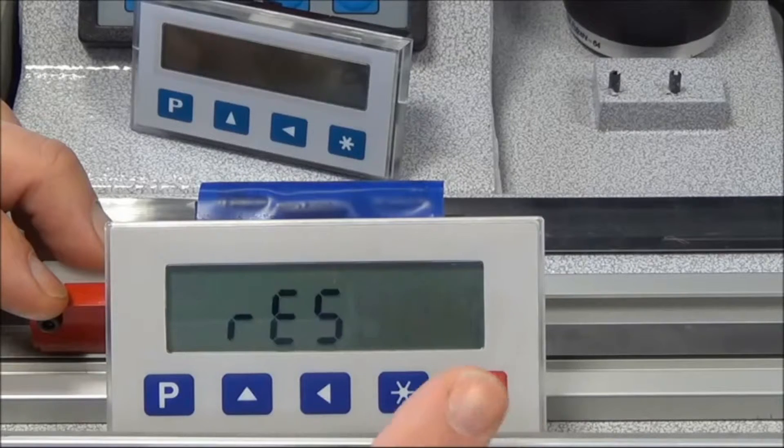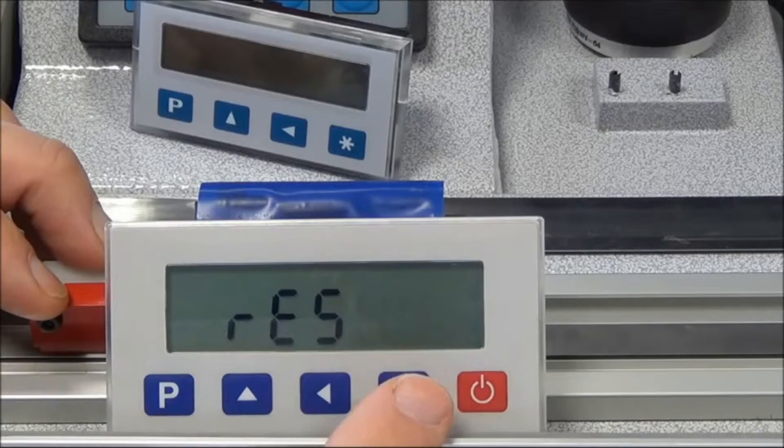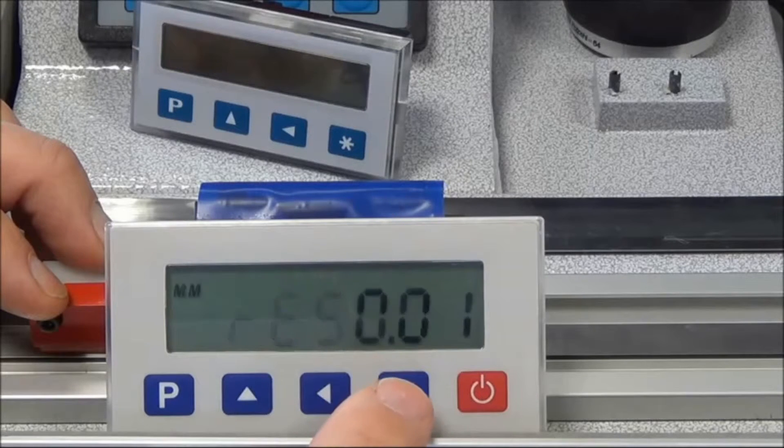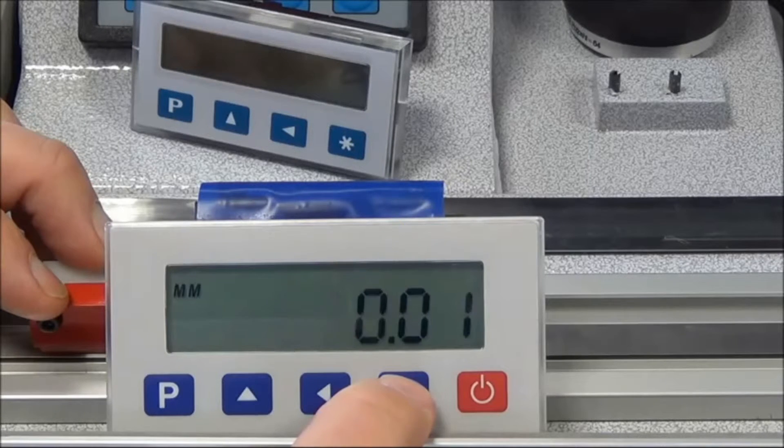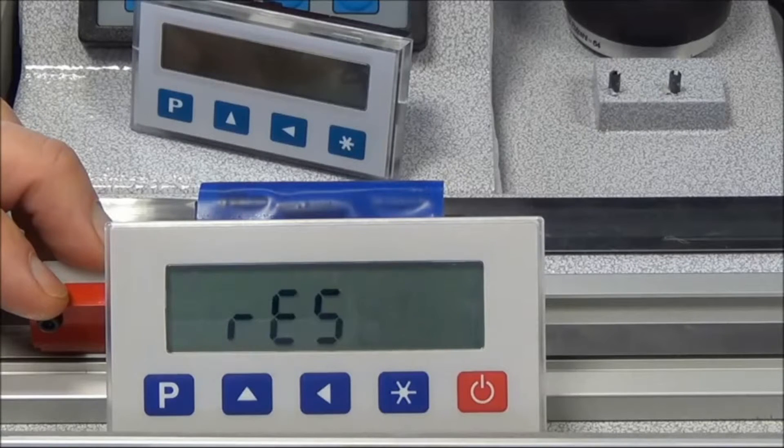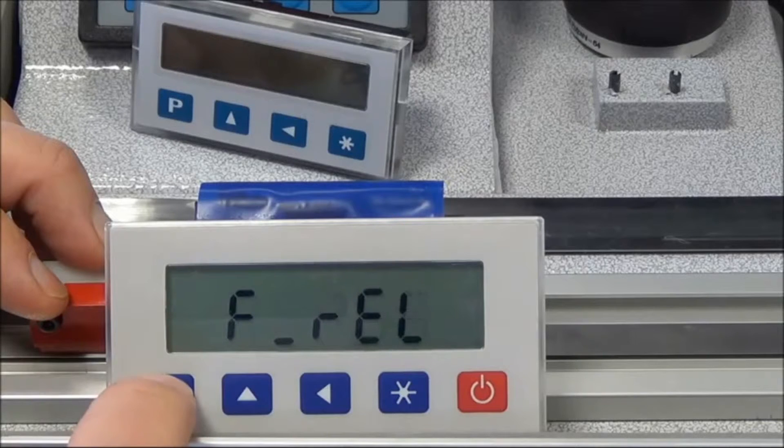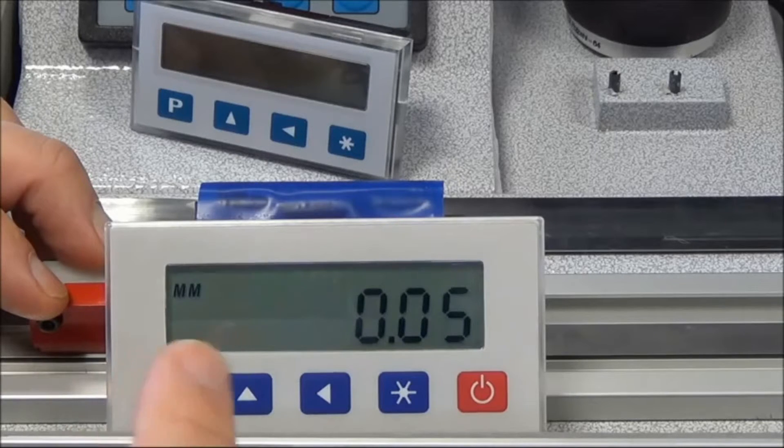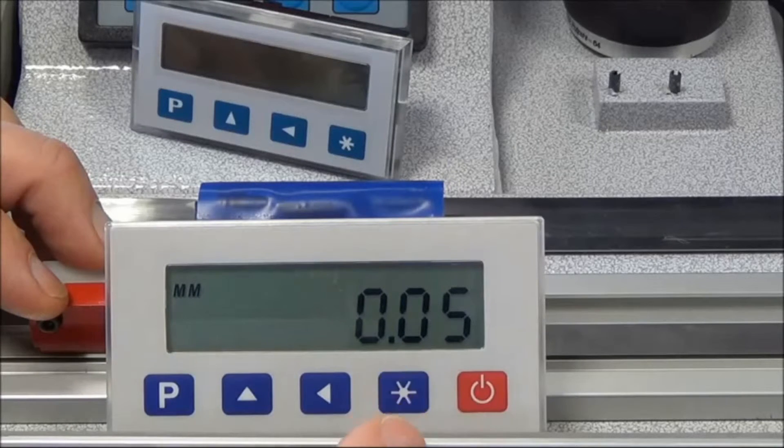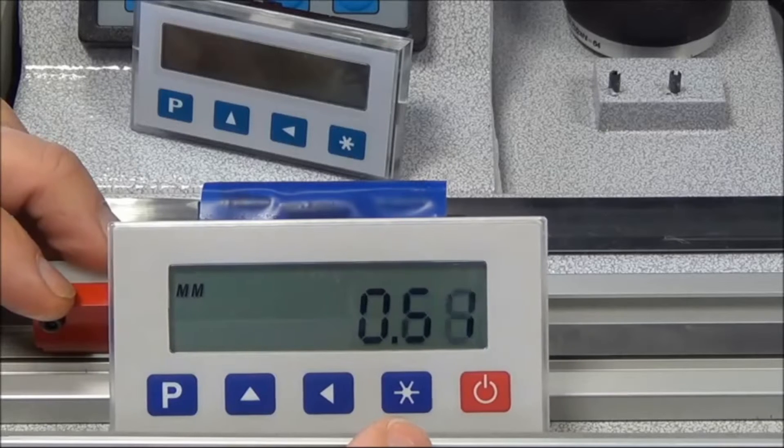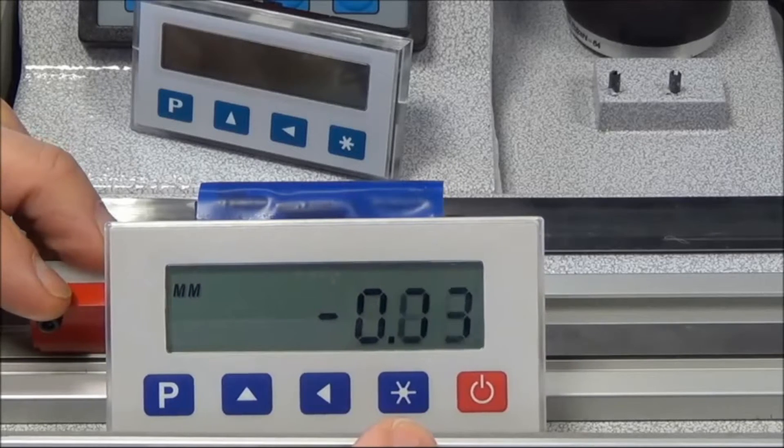We're in the parameter now - change the value and then press the star button to register the change. When we come out by stepping through via the P button to the end, it comes back to the setting and now you can see the movement is to a hundredth of a millimeter.